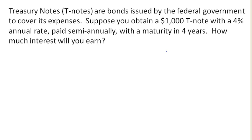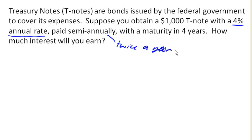Suppose you obtain a $1,000 T-note with a 4% annual rate, but it's paid semi-annually — meaning twice a year. Our bond has a maturity in 4 years. How much interest will we earn? Our starting amount, the initial amount of this loan, was $1,000.